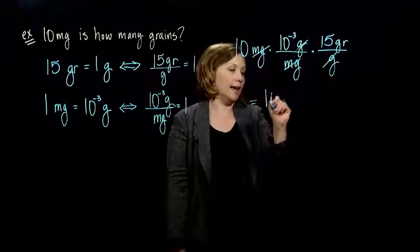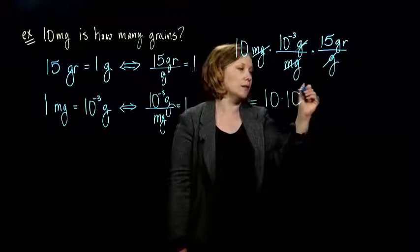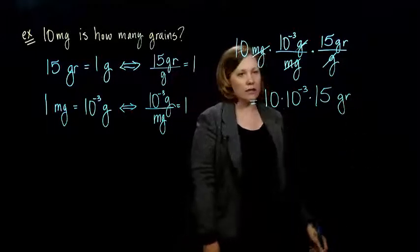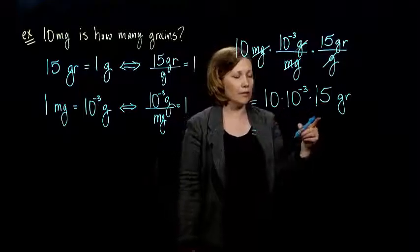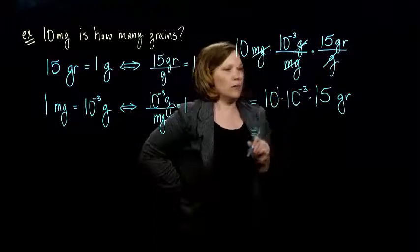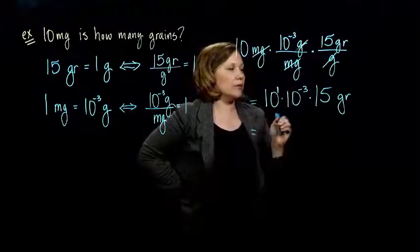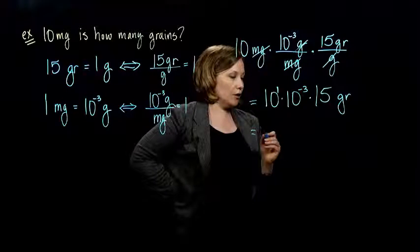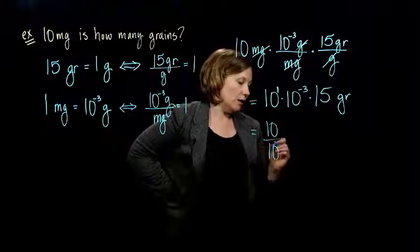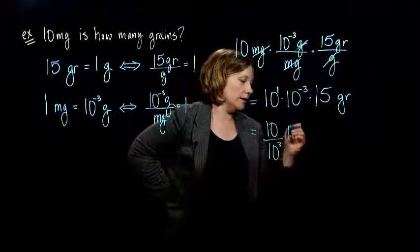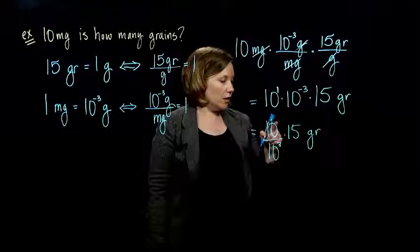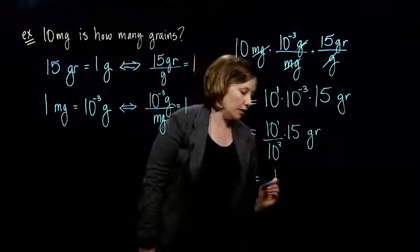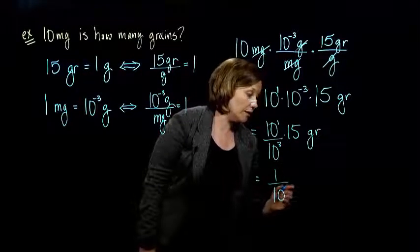And so, all I'm left with is 10 times 10 to the minus 3 times 15. And I've got grains. And so, now I just have to do the math here. 10, you can think of this as a 1. We can use our exponent rules on this. Or you can drop this into the bottom and make it a positive exponent if that's easier for you. Either way, I'll show you what I mean by that. So, 10 over 10 to the third, that's going to leave us with, 10 is going to cancel and leave us with 10 squared in the bottom.